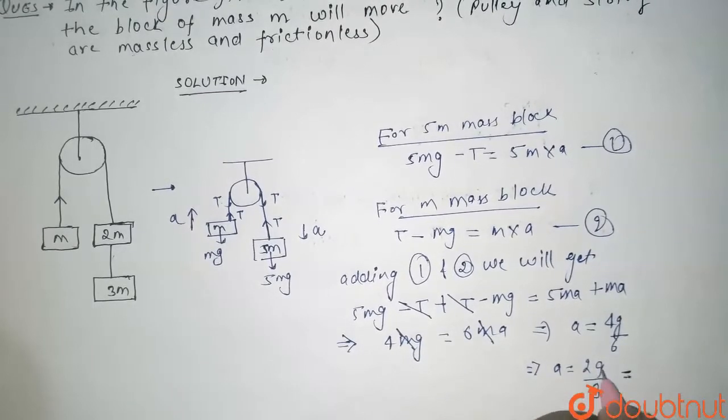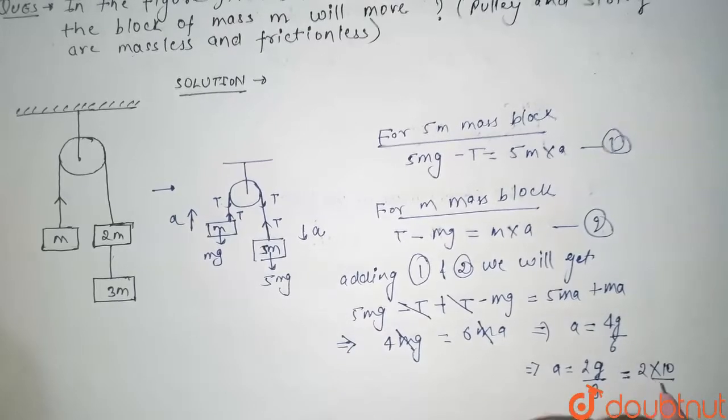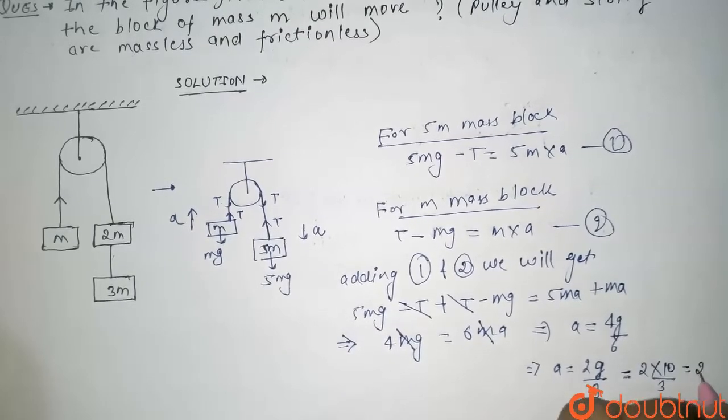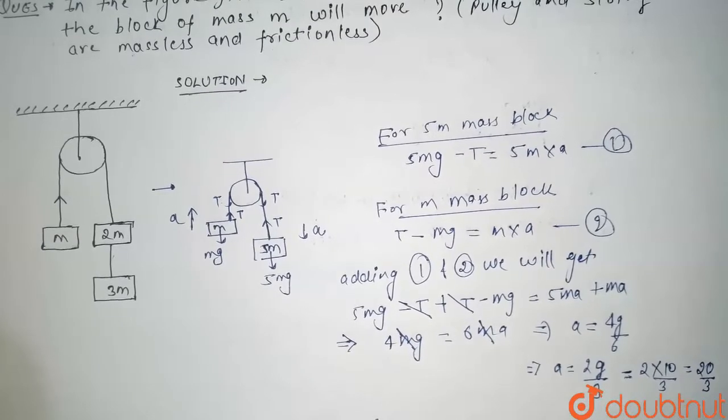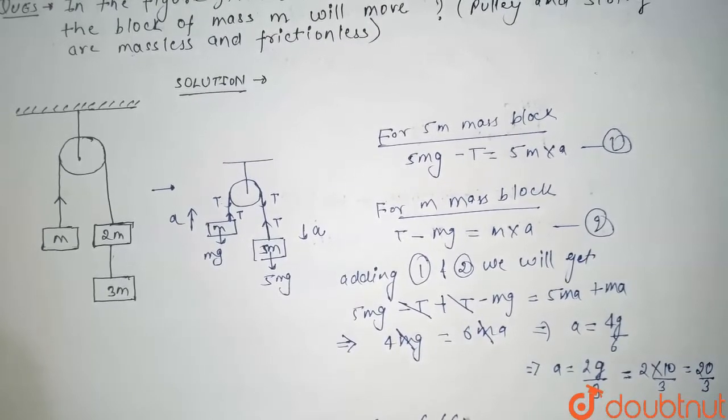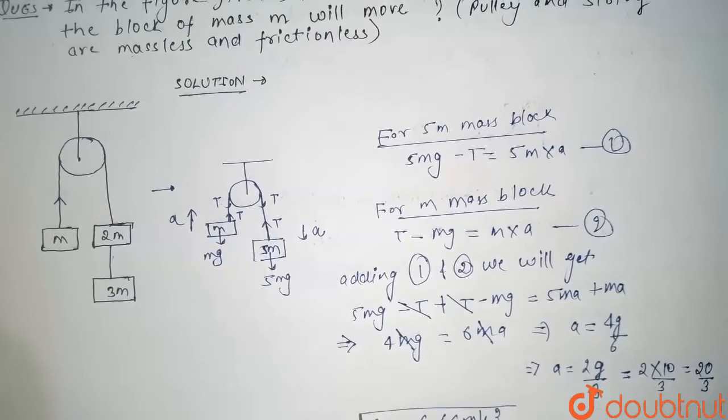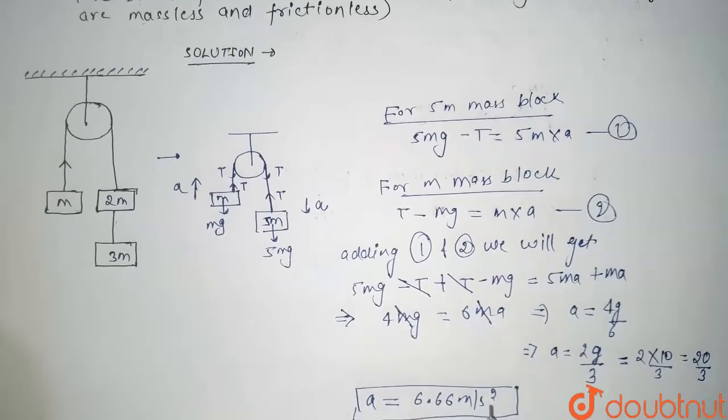We know that value of g is 10. So it will be 2 into 10 by 3, that is 20 by 3. So it will be 6.66 meters per second square. So the acceleration of mass m block comes out to be 6.66 meters per second square. This is our final answer. Thank you guys.